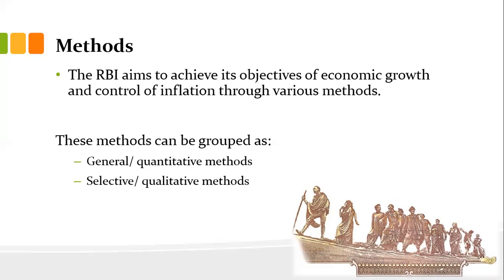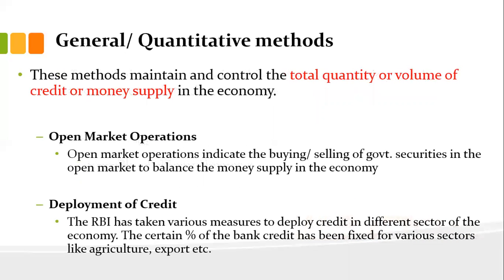RBI aims to achieve its objectives of economic growth and inflation control through various methods. These methods are grouped into two categories: first, general or quantitative methods, and second, selective or qualitative methods. Under general or quantitative methods, the focus is on maintaining and controlling the total quantity or volume of credit and money supply in the economy.